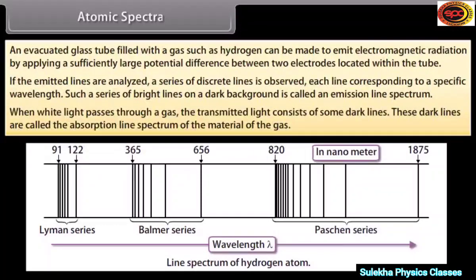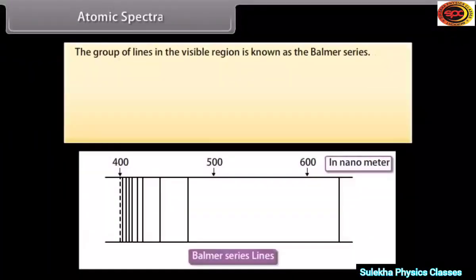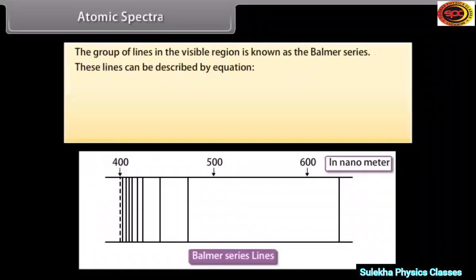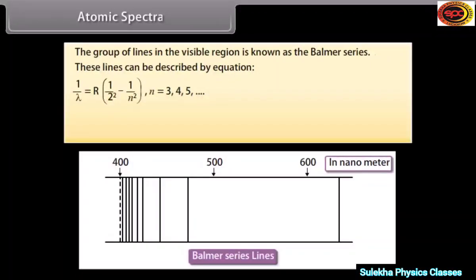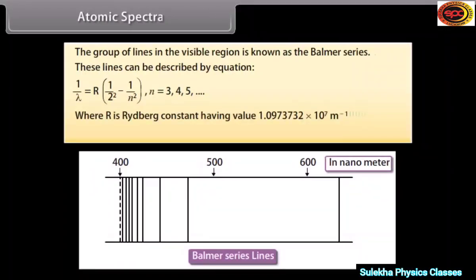When white light passes through a gas, the transmitted light consists of some dark lines called the absorption line spectrum. The group of lines in the visible region is known as the Balmer series, described by 1/λ = R(1/2² − 1/N²), where N may be 3, 4, 5, and so on, and R is the Rydberg constant with value 1.0973732 × 10⁷ per meter.